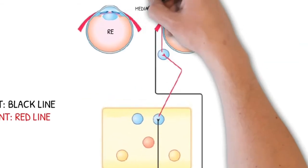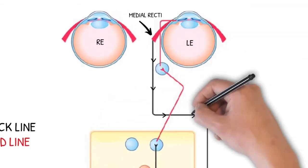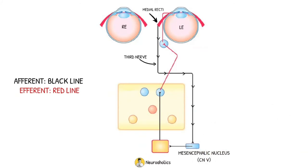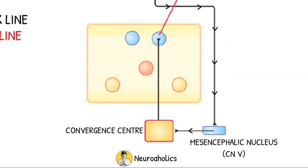The afferent starts from the medial recti. This travels centrally via the third nerve to the mesencephalic nucleus of the fifth nerve. From here the impulses travel to the convergence center in the tectal or pre-tectal region.